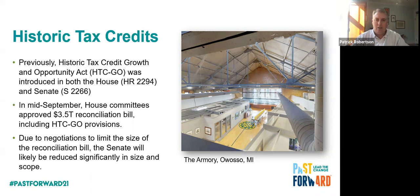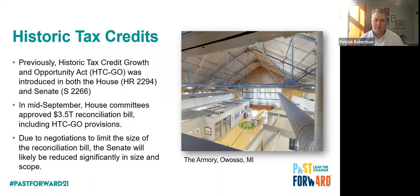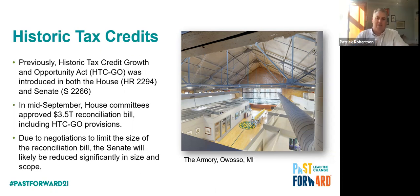The Federal Historic Tax Credit is the federal government's single largest investment in preservation. It costs the federal government about a billion dollars a year in tax credits — that's a billion dollar investment in rehabilitation across the country. And since it's a 20% credit, that leverages an additional $5 billion every year in private capital going into rehabilitation projects. So one billion from the federal government, five billion from the private sector — six billion a year into preservation because of the credit.